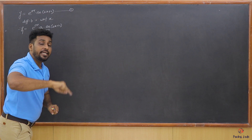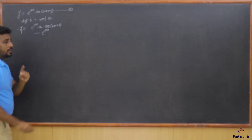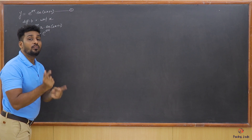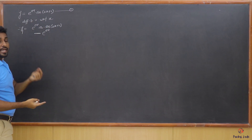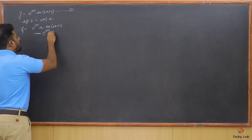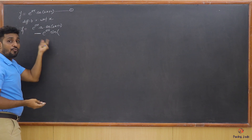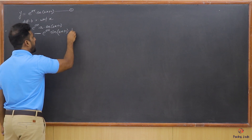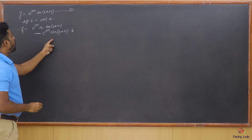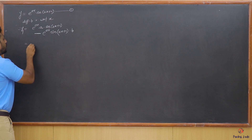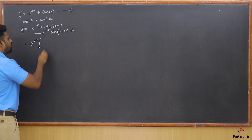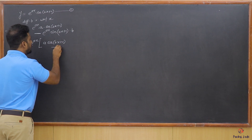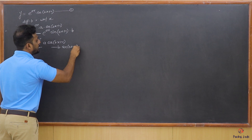The derivative of cos(x) is minus sin(x). There was a plus sign between the terms, and now the plus sign becomes a minus sign because the derivative of cos gives minus sine. Derivative of cos(bx + c) is minus sin(bx + c) · b, from the chain rule. Factoring out e^(ax), we are left with: a · cos(bx + c) minus b · sin(bx + c).